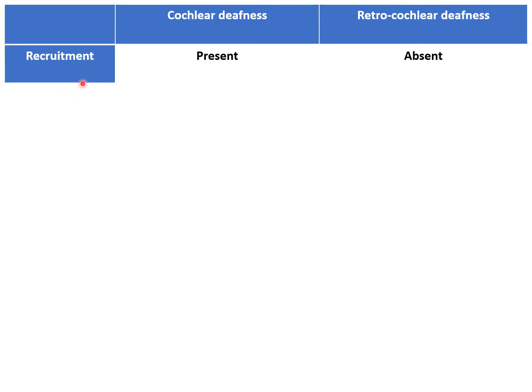The first is the recruitment phenomenon. Recruitment is the phenomenon of abnormal growth of loudness. It means a loud sound which is tolerable in a normal ear may grow to abnormal levels of loudness in the recruiting ear and becomes intolerable. Recruitment is a feature of cochlear deafness, while it is absent in retro-cochlear deafness. The clinical importance of recruitment is that such patients are poor candidates for hearing aids.